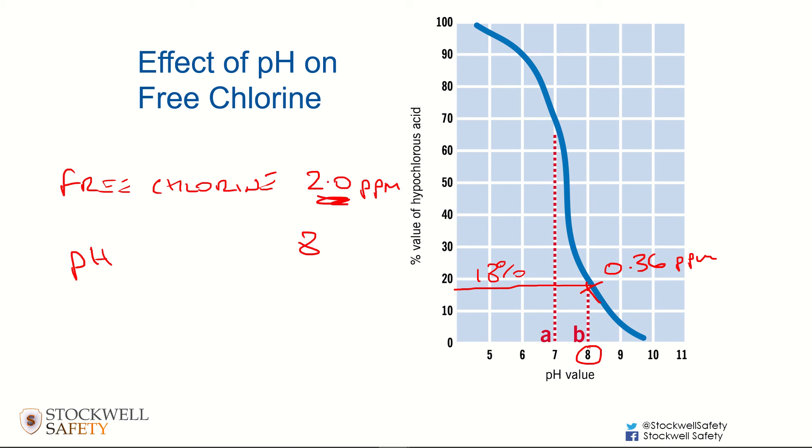You might have 2 showing up on your DPD1 tablet, but if you've got 8 showing up on your phenol red tablet test, then the effect of that is to render most of it useless, and only 0.36 of it is going to be doing any good in terms of killing bacteria and bugs.